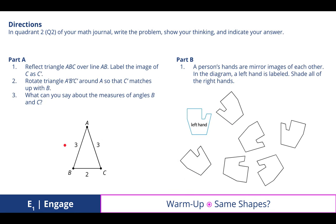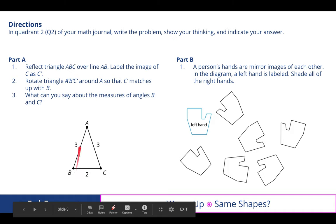In quadrant 2 of your math journal, write the problem, show your thinking, and indicate your answer. For part A, we explored and reviewed actually the properties of an isosceles triangle when we have two sides that are equal.